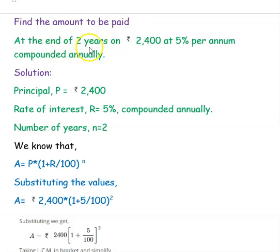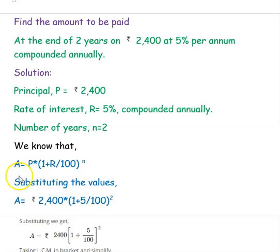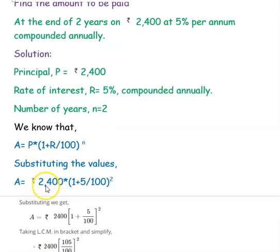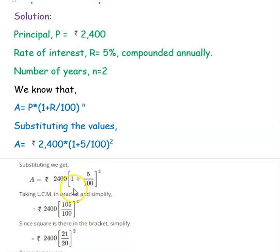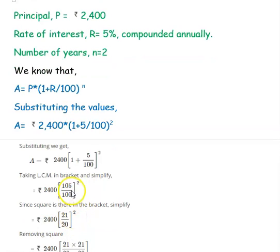Next question: find the amount to be paid at the end of 2 years on Rs. 2,400 at 5% per annum compounded annually. The principal is Rs. 2,400, rate of interest is 5% compounded annually, and the number of years is 2. Since it is given annually, we can directly substitute in the formula: Amount = P into (1 + R/100)^N. So, 2,400 into (1 + 5/100)^2. Simplifying: (105/100)^2 = (21/20)^2, giving 2,400 into (21/20)^2.